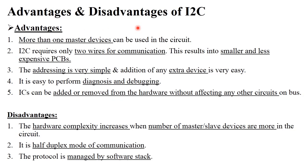The advantages of I2C protocol include: more than one master device can be used in a circuit, which is a key advantage compared to SPI, UART, and RS-232. It requires only two wires, making PCB design smaller and less expensive. Addressing is simple because the master knows the address of every slave. Adding or removing devices is very easy, and it is straightforward to perform diagnosis and debugging.